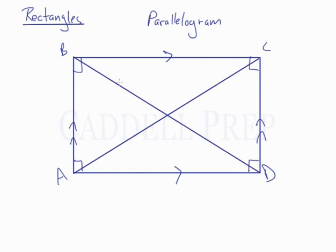just like in a regular parallelogram, these bisect each other. So if this is point E, we have that BE is congruent to ED.